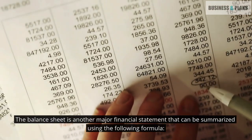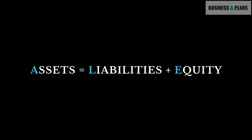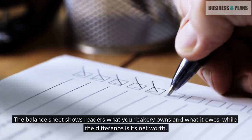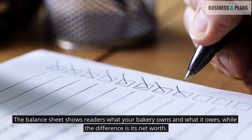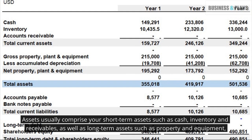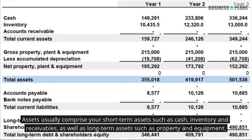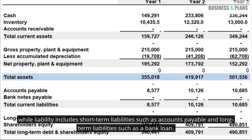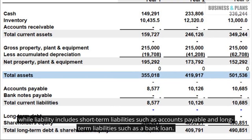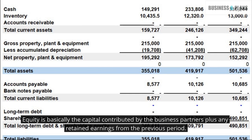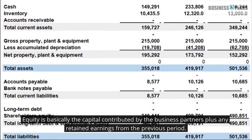The balance sheet is another major financial statement that can be summarized using the formula: Assets = Liabilities + Equity. It is simply a picture of your business at a certain point in time, showing readers what your bakery owns and what it owes — while the difference is its net worth. Assets usually comprise short-term assets such as cash, inventory, and receivables, as well as long-term assets such as property and equipment. Liabilities include short-term liabilities such as accounts payable, and long-term liabilities such as a bank loan. Equity is basically the capital contributed by the business partners plus any retained earnings from the previous period.